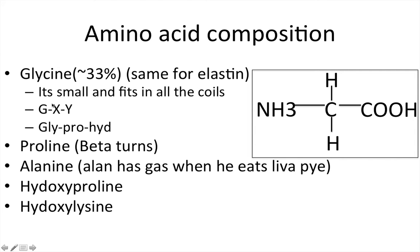Here's an example of the amino acid sequence we'd see in collagen. In every three amino acids, you'd see a glycine — for example, glycine, proline, and then hydroxyproline. We see a lot of proline in there at the beta turns, and that makes sense because collagen is very tightly coiled with lots of little turns, so proline is a good fit with those beta turns.